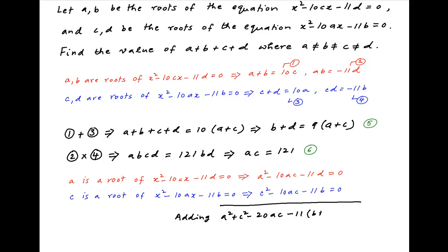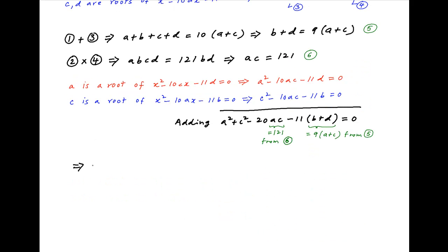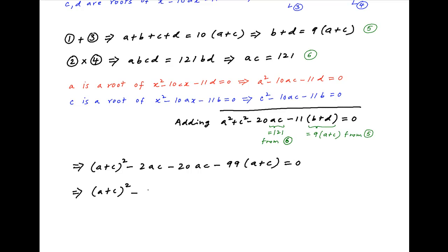Now, b plus d equals 9 times (a plus c) from result 5, and ac equals 121. Substituting these results, we get a squared plus c squared, which can be written as (a plus c) squared minus 2ac, minus 20ac, minus 99 times (a plus c) equals 0, which simplifies to (a plus c) squared minus 99 times (a plus c) minus 22 times ac equals 0.